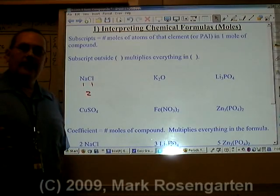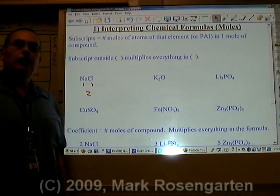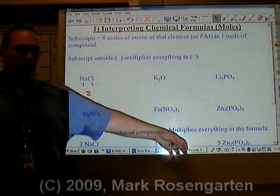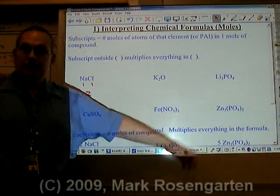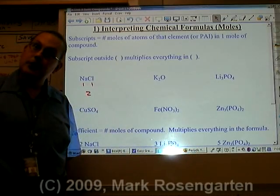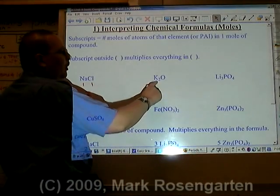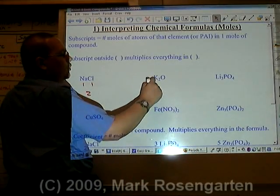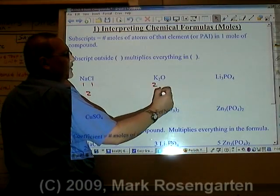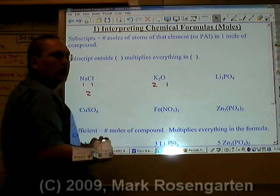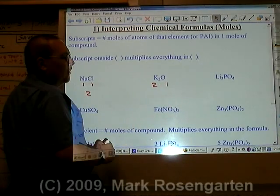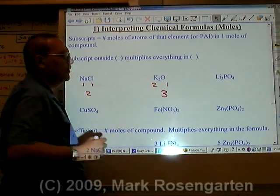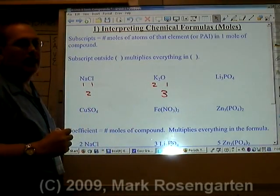That's kind of like saying per mole of human beings, there'd be two moles of arms, because each person has two arms. One mole of potassium oxide has two moles of potassium and one mole of oxygen, for a total of three moles worth of ions.